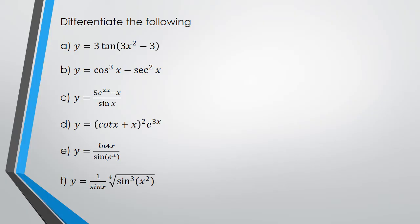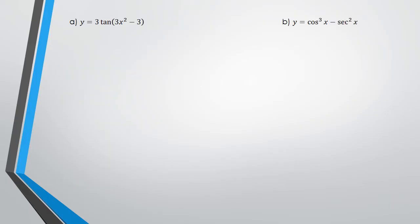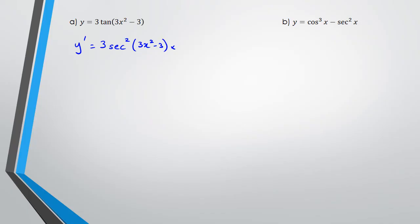Starting with question A, this is basically just using the chain rule. So we're going to write y' equals — differentiation of tan to the power of 3 gives us 3 times the bracket squared, so we get 3(3x² - 3), and then that's multiplied by the differentiation of whatever is inside the bracket, which is 6x. To simplify, our answer is 18x times (3x² - 3) squared.